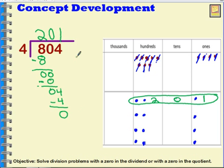So my dividend, eight hundred four, was divided by my divisor, which was four, and I got my quotient, which was two hundred one.